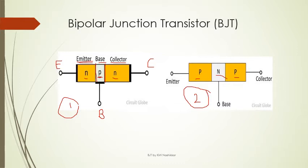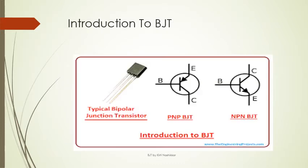In case of NPN, free electrons are the majority charge carriers and holes are the minority charge carriers. In case of PNP, holes are the majority charge carriers and electrons are the minority charge carriers. This is the typical bipolar junction transistor available in the market — very small in size, having three terminals: emitter, base, and collector. This is the symbol for PNP and this is for NPN. The only difference is the direction of the arrow: in NPN the arrow points outward, and in PNP it points inward, indicating the direction of conventional current flow.